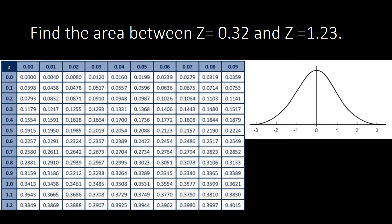If we use an illustration, we can plot z equal to 0.32 somewhere on the right side because it's positive, and 1.23 might be somewhere further right. Notice both z values are positive, so they lie on the same side. This is the area we are looking for.